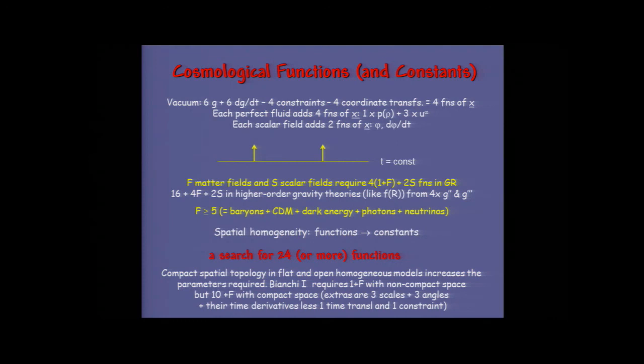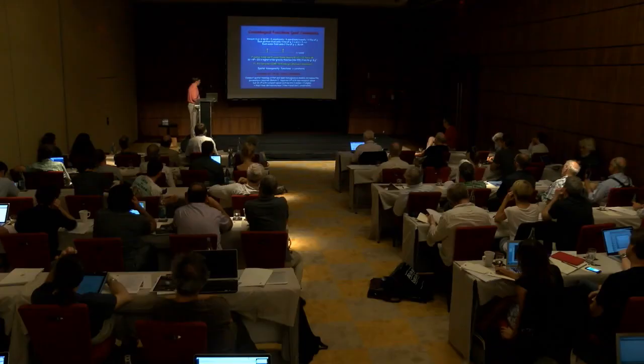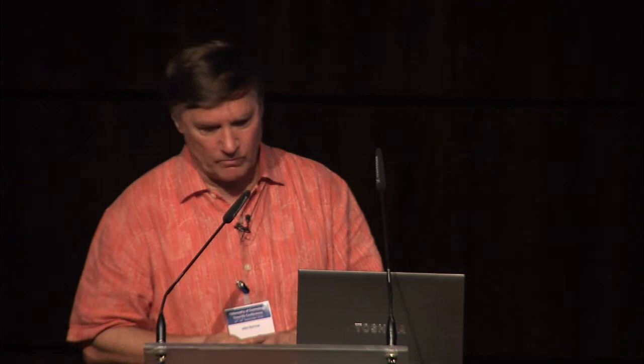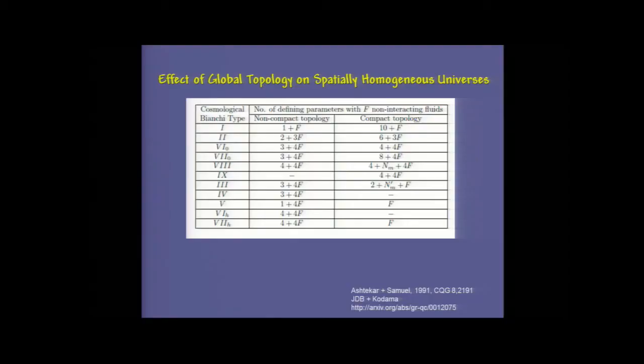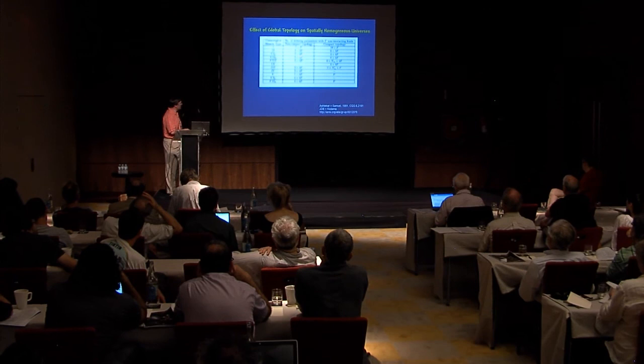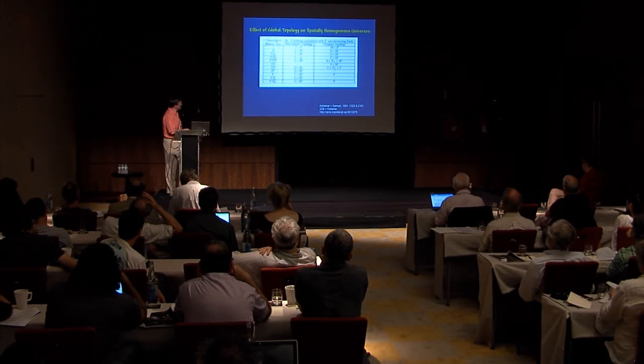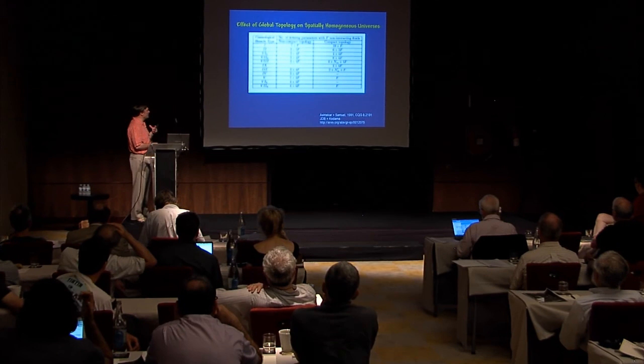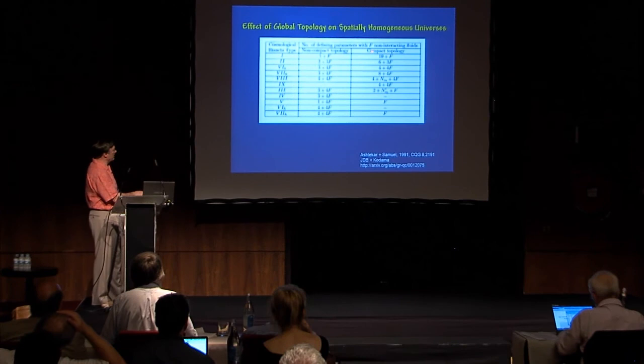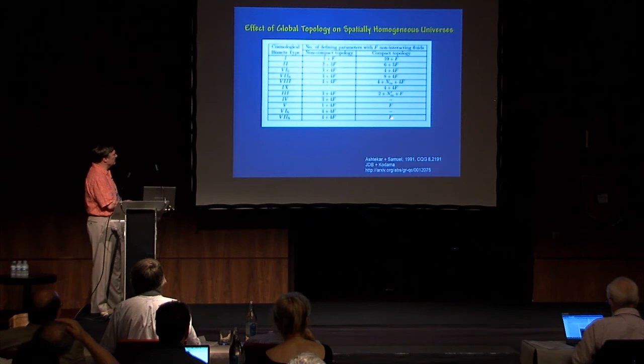In type I, your 1+F parameter count turns into 10+F with compactification of the space. A little chart shows that with the old story—no compact space—this is how many parameters you need for homogeneous models with F matter fields. But if you compactify the topology, a couple of models no longer exist, the simplest one suddenly becomes the most general by this criterion, and the previously most general open one becomes almost the least general. Topology is a big factor. For the inhomogeneous case, the generic situation is not known.